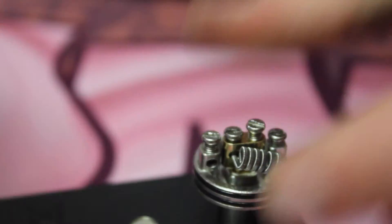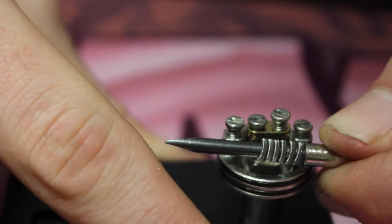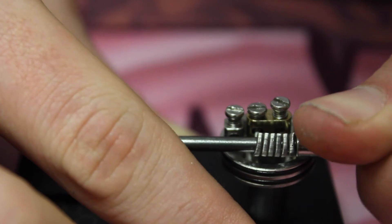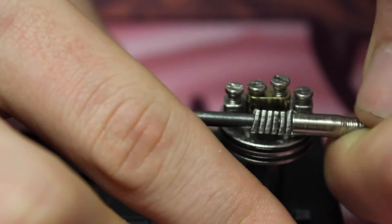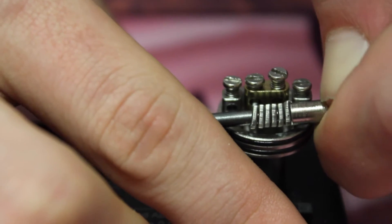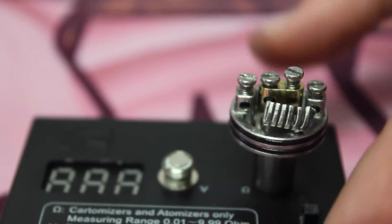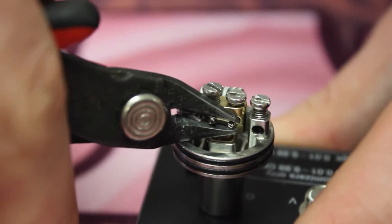Then you're gonna flip your screwdriver around and you're gonna push it towards the center. Don't push too hard because you don't want to break the wire. Just like that. And I'm gonna clip this lead real fast. That way it doesn't short the other coil.